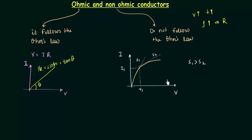In the previous lecture I told you, and here as well, that the slope is 1 by R. So 1 by R1 is greater than 1 by R2, or you can say that R2 is greater than R1.